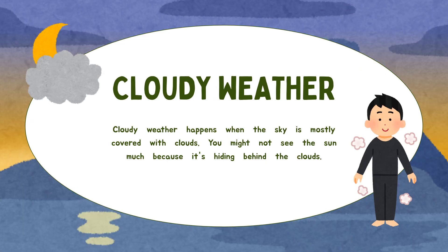So where did the sun go? It's hiding behind the clouds! Yes, this is cloudy weather. Cloudy weather happens when the sky is mostly covered with clouds. You might not see the sun much because it's hiding behind the clouds.